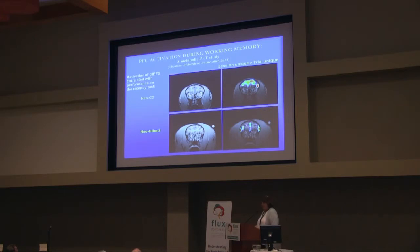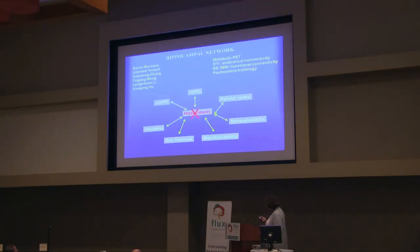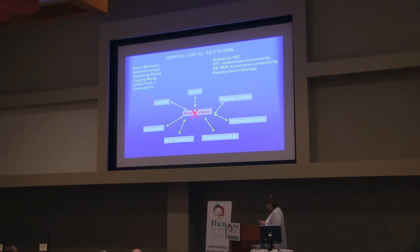This activation in the lesion group was very correlated with their performance on the task. We seem to show that this early lesion has impacted the functioning, or at least the maturation, of the prefrontal cortex. It would now be interesting to see what this entire neural network is doing when you have hippocampal dysfunction.